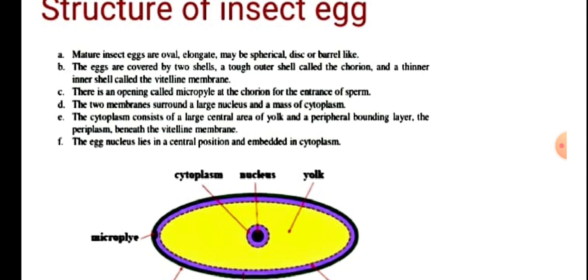Insect eggs can be oval, elongate, spherical, disc, or barrel-like in shape.